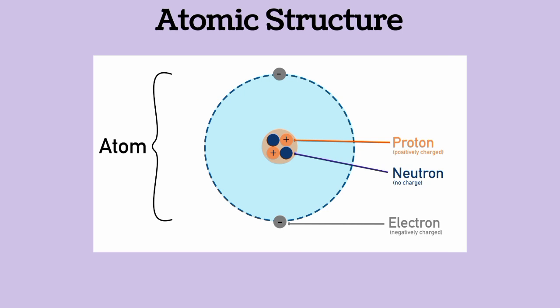The proton has a positive charge while the neutron has no charge. Protons plus neutrons are called nucleons. The electron, which is the negatively charged part of the atom, is the one that is involved in a chemical reaction.